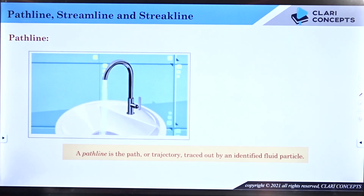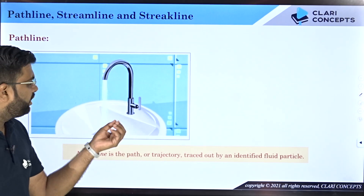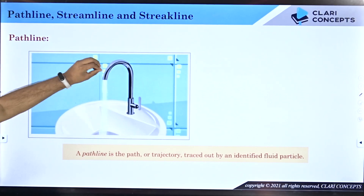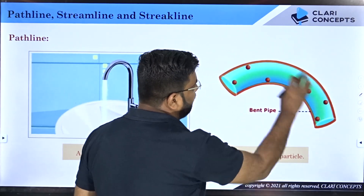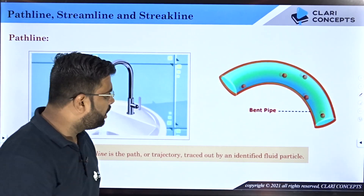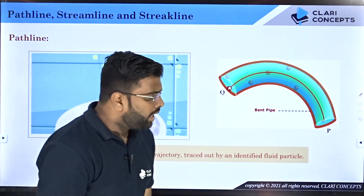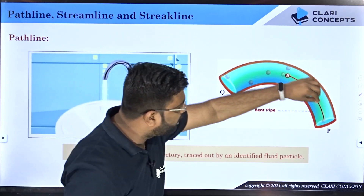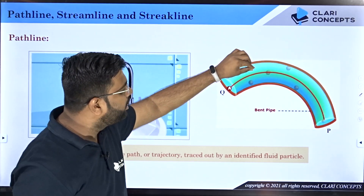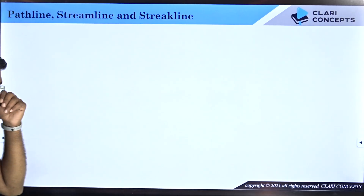Now let us talk about an example that reflects the pathline. A very common example: a wash basin with a tap. Water is flowing through this tap. If I zoom into the curved bent pipe, you can see the water molecules flowing through this pipe. If I identify one particle called A which is at point P, this particle is traveling along a line in a given time frame. This red color line is called the pathline of particle A which was found at point P.